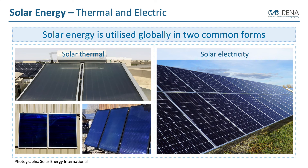Solar energy is utilized globally in two common forms. Most people have seen some solar, whether small systems or large-scale applications. There are many different types you may have seen but not been familiar with how they work. We can primarily put solar into two categories. On the left, we see what we call solar thermal systems — there are a few different types of panels that produce solar thermal energy, and in certain parts of the world these are common and found all over rooftops.